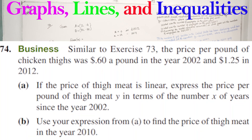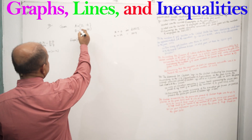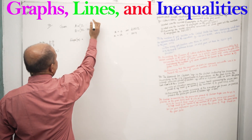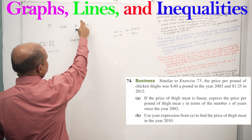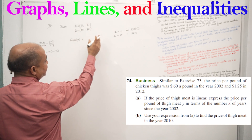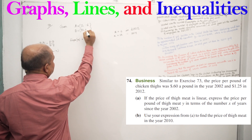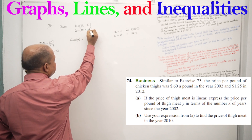Exercise 74 is similar to exercise 73. The price per pound of chicken thigh was $0.60 in 2002 and $1.25 in 2012. X equals 0 in 2002 and X equals 10 in 2012. The slope equals Y2 minus Y1 divided by X2 minus X1, which is 1.25 minus 0.60 divided by 10 minus 0. That is 0.65 divided by 10, equals 0.065.